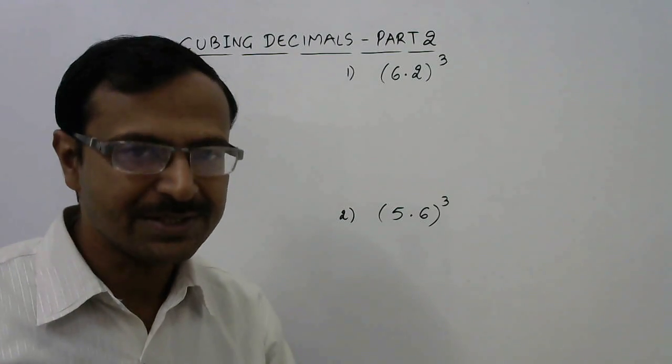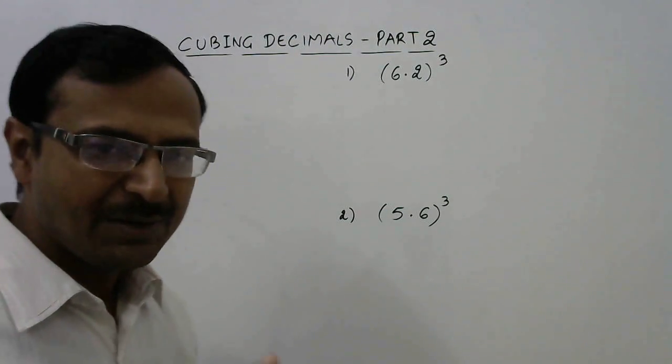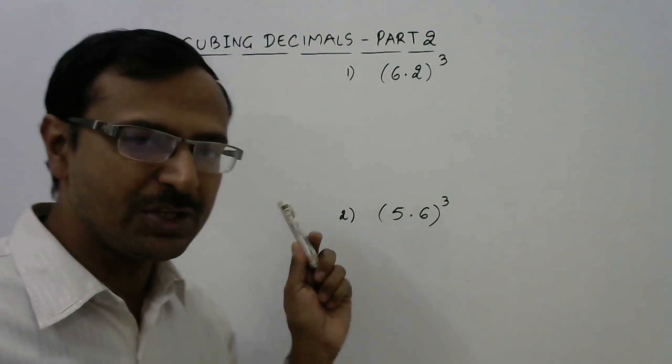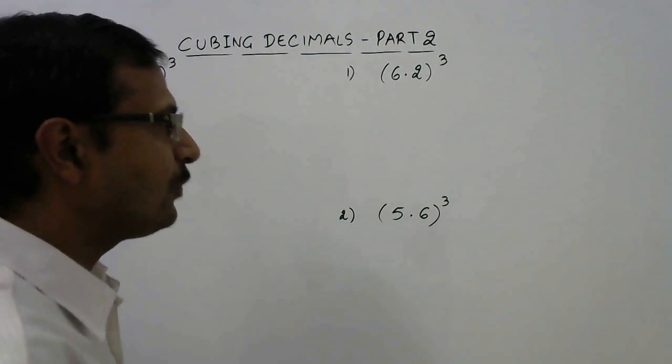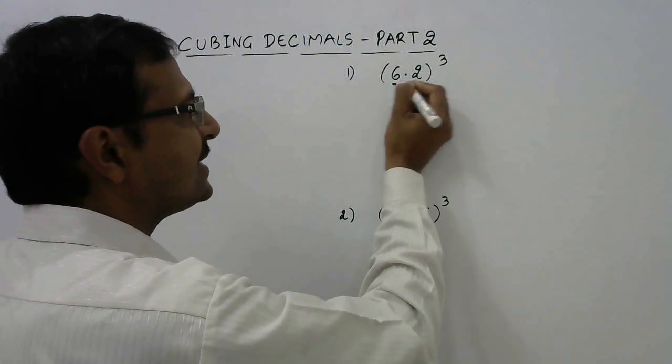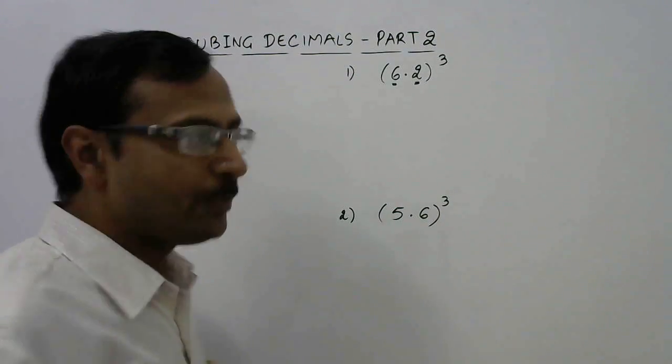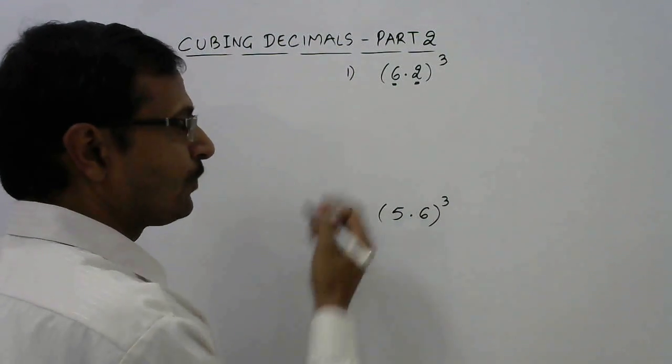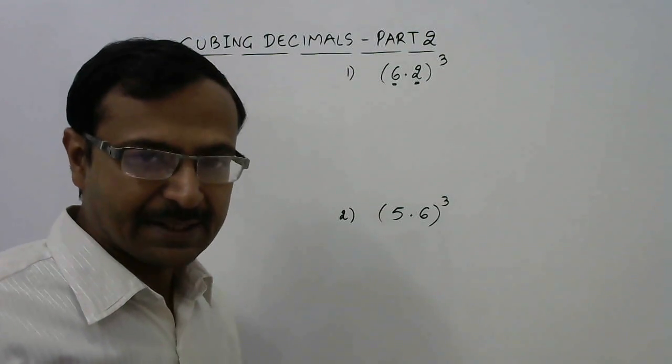Once you are aware of this method you can cube any decimal number of this kind - one digit before the decimal, one digit after the decimal. So let's see four more questions. 6.2 whole cube. I told you we have to consider this as a and this as b. So first of all write a cube, that is 6 cube. You need to know what is the cube of all single digit numbers. 6 cube is 216.